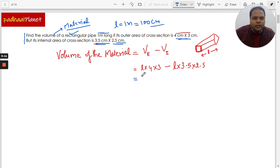What we can simply write is 100 multiplied by 12 minus 100 multiplied by 8.75. So here we can write 1200 minus 875, so the answer which we get is 325 cubic centimeters.